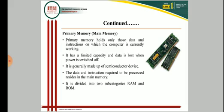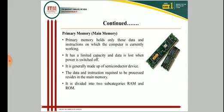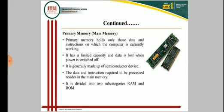Semiconductors are those which have a conductivity range between conductors and insulators. Some of the important ones are silicon, germanium, and gallium. There are some compounds also, like gallium arsenide, which act as a semiconductor. In main memory, processing of data and instructions is carried out, and data is stored in secondary memory when we save it.